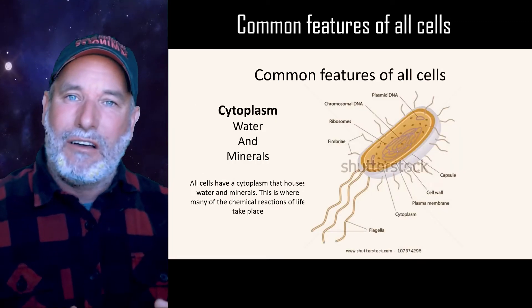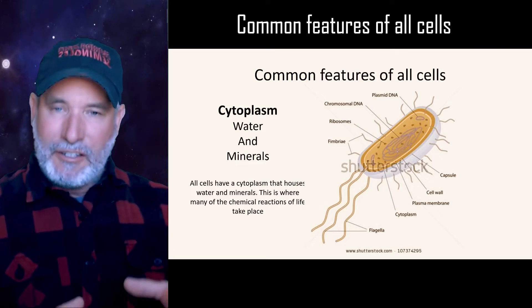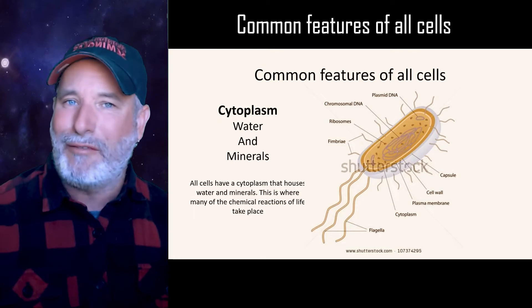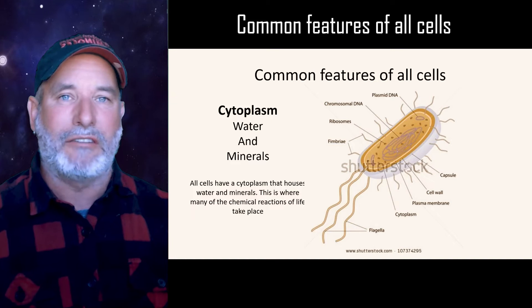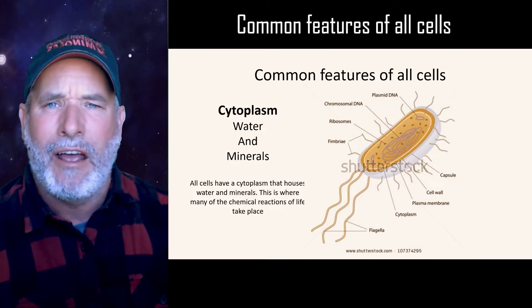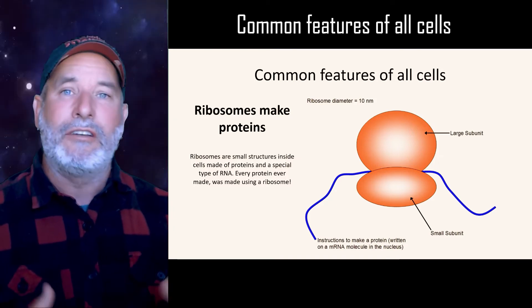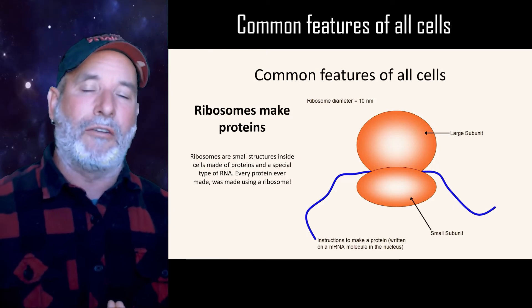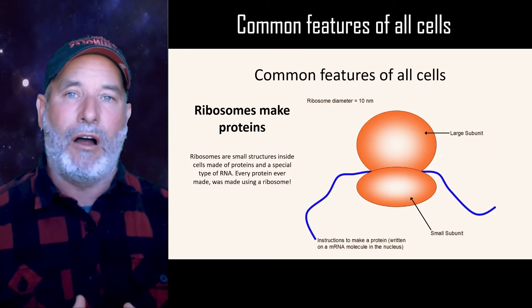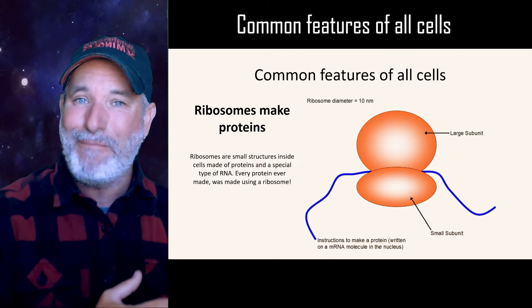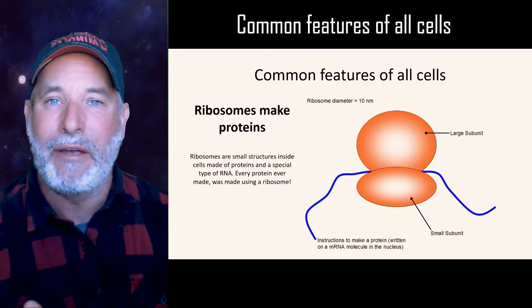Inside the cell we also have what is called the cytoplasm. In the cytoplasm, this is where all the chemistry of life takes place — water, minerals, building blocks of life, and enzymes floating around, along with things like ribosomes. All life makes proteins using this molecular structure called a ribosome. Ribosomes are made up of both RNA and proteins, and it's the RNA that actually puts the amino acids together to make a protein.